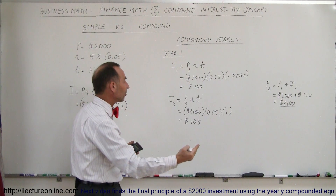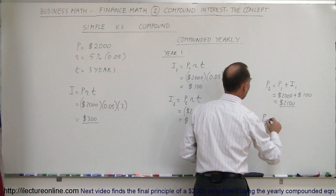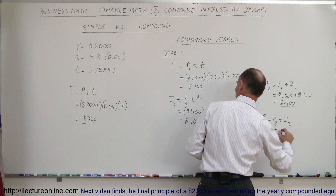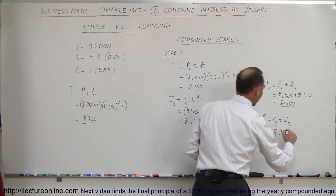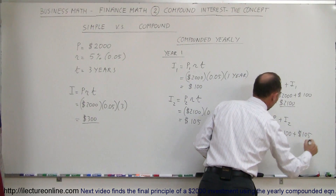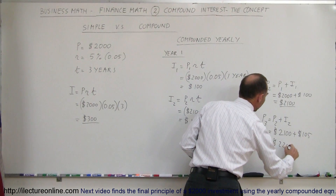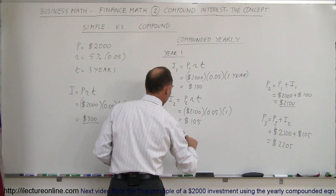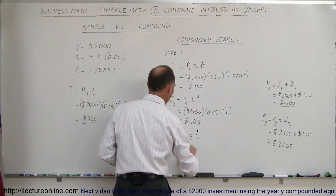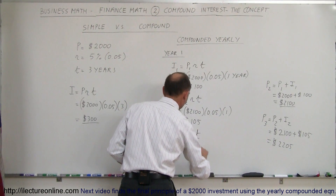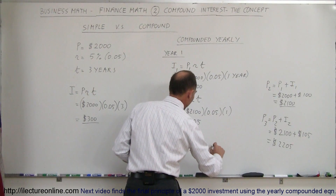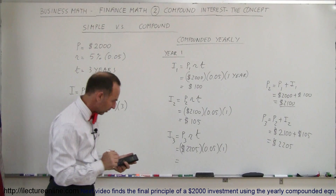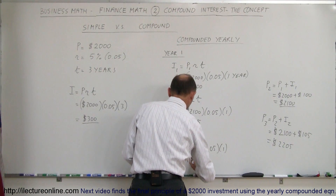So what will now be the principal invested in the third year? The principal invested in the third year equals the principal of the second year plus the interest earned in the second year. We invested $2,100 and earned another $105, so we're going to invest $2,205 in the third year. The interest earned in the third year is $2,205 × 0.05 × 1 year = $110.25.